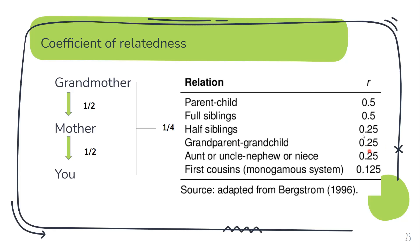Between full siblings — those sharing both the same mother and father — the coefficient of relatedness is 0.5. Half siblings, who share only one parent, have r = 0.25. For aunt/uncle to nephew/niece relationships, r is also 0.25. For first cousins, r = 0.125.